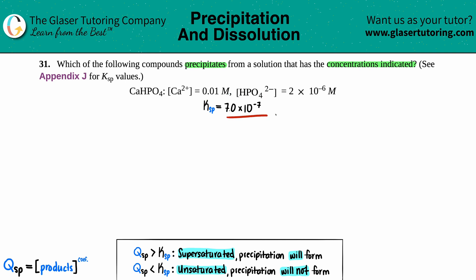I went into the back of the book to find the Ksp value, the solubility product, which is 7.0 times 10 to the negative 7. So we have to find out if calcium hydrogen phosphate is going to precipitate with these molarities.